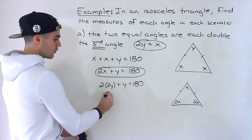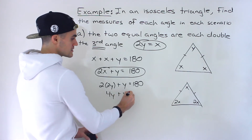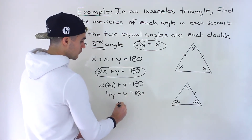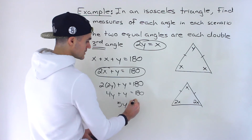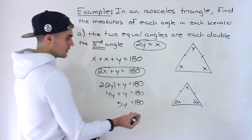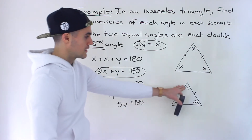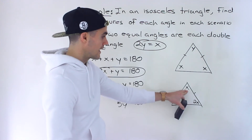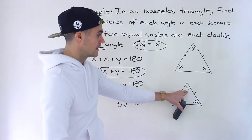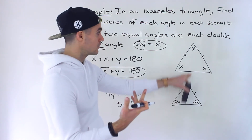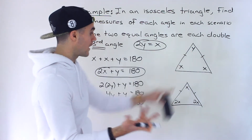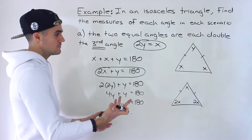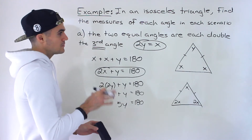Notice that we end up with 4y plus y equals 180, which is 5y equals 180. Using the single-variable approach, we'd similarly get 5x equals 180, where that x is the third angle — the same solution either way.